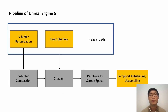This is the current hair rendering pipeline of Unreal Engine 5. It uses rasterization for VBuffer and Deep Opacity Map. When there are a lot of segments, the rasterization of VBuffer and Deep Opacity Map is quite slow and becomes the bottleneck of this pipeline.